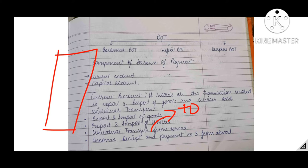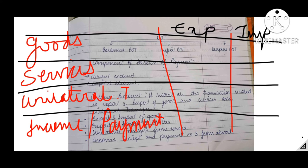The third item in the current account is unilateral or one-sided transfers to and from abroad — both of them are included in the current account as they are one-way transactions. The fourth and last item is income receipts and payments to and from abroad. So the receipts related to profit, rent, interest, or any investment income — all of them are included in the current account.